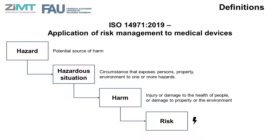Before we dive into ISO 14971, we need to further understand some definitions. We have already defined risk management and risk, but there are three other important definitions to understand. These are: hazardous situation, which is defined as a circumstance that exposes people, property, or environment to one or more hazards; where a hazard is defined as a potential source of harm; and harm is defined as an injury or damage to the health of people, or damage to property or the environment.